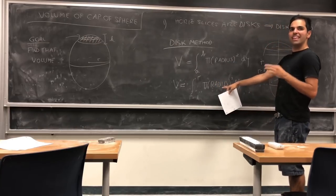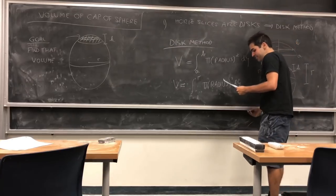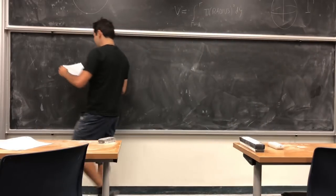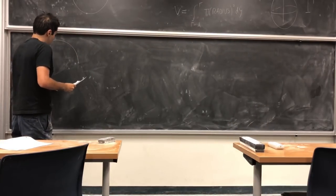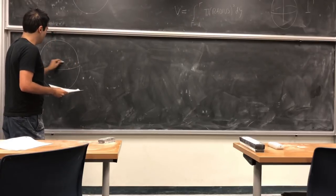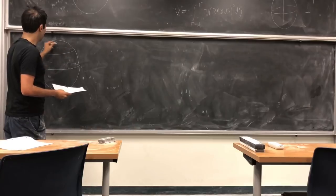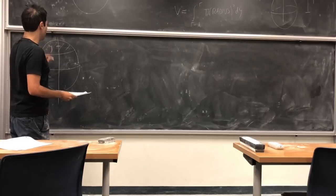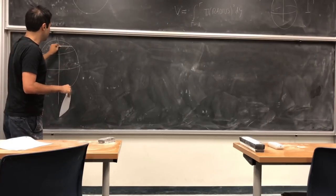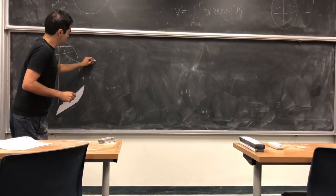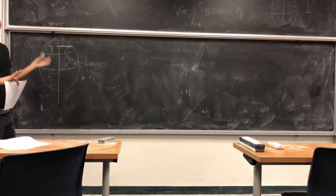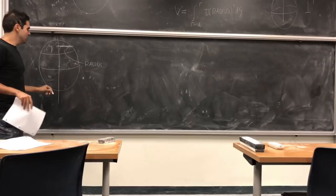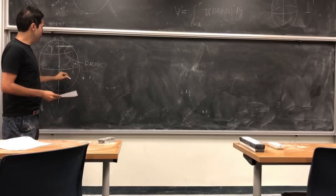And now, of course, the next step is to figure out what the radius is. So let me redraw another picture. We have again this ball, and maybe this cap here. Now suppose that you're at some point y and you want to figure out the radius here. Well, there's not much to do except for using the equation for the circle. So the equation of the circle is, if you have some point x, then x² + y² = r².